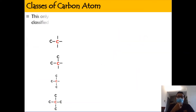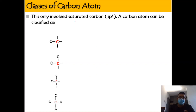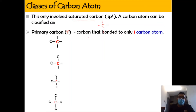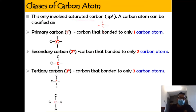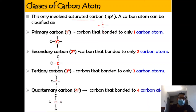Now we're going to learn how to classify carbon atoms involving saturated carbon. Saturated carbon means it has 4 single bonds. A carbon atom can be classified as primary carbon if it is bonded to only 1 carbon atom. If the carbon is attached to 2 other carbons, it is secondary; if attached to 3, it is tertiary; and if attached to 4, it is quaternary. Remember, this classification only applies to carbons with 4 single bonds.